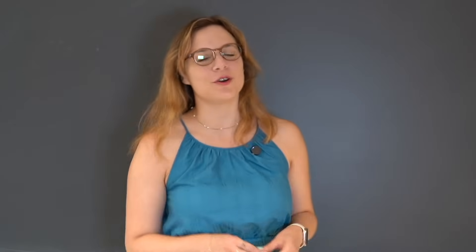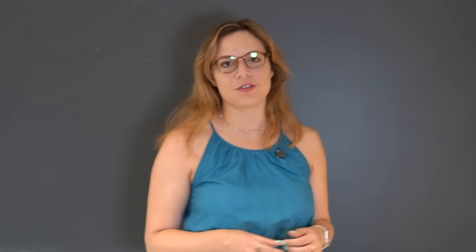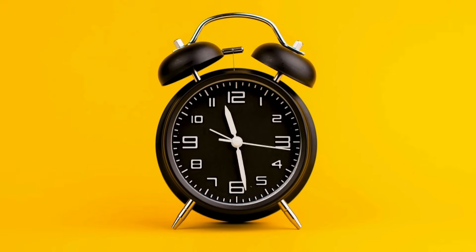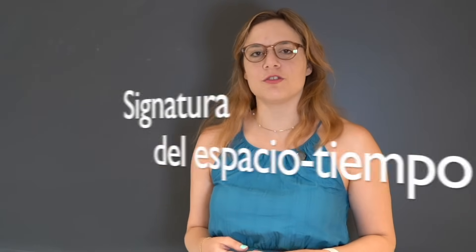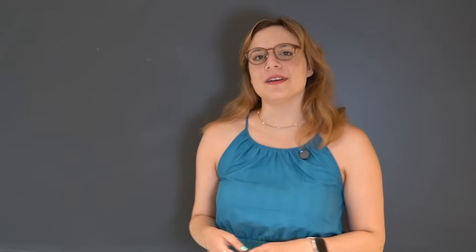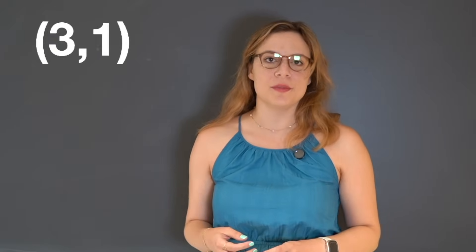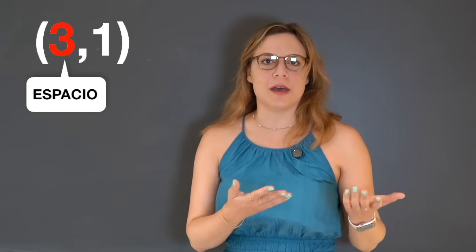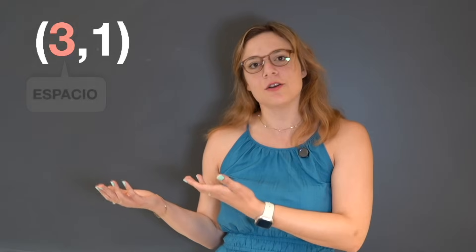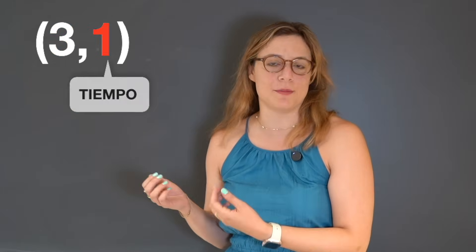You might have heard that we live in four space-time dimensions — three of space and one of time. This is something that can be experienced very easily because we can move left and right, back and forth, or up and down, and every second that passes we move through time. In theoretical physics, this is what we call the signature of space-time. Our perceived universe has a signature 3,1, where the first number counts the number of space dimensions and the second counts the number of time dimensions.